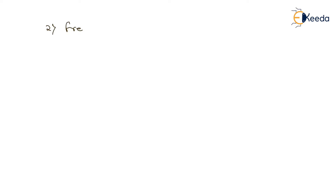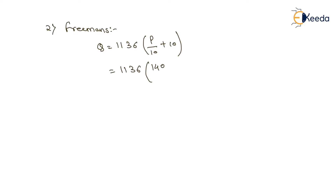The next will be the Freeman's formula. According to Freeman's formula, the discharge equals 1136 times (P/10 + 10). The value of P is 140. We divide this value by 60,000 to get the answer in meter cube per second, and we get 0.454 meter cube per second as the discharge from Freeman's formula.